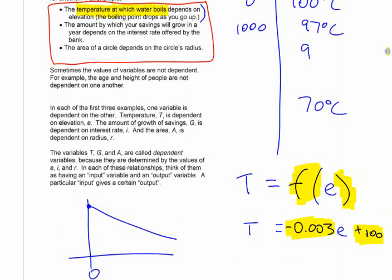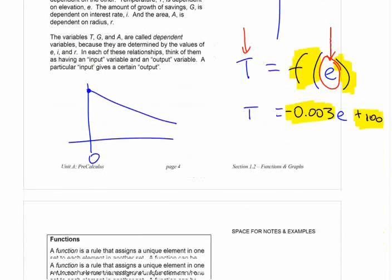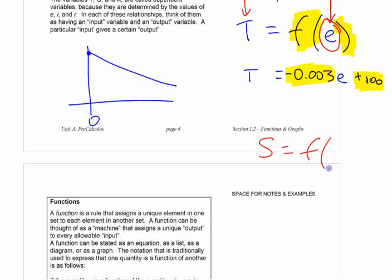There are a couple other functions written up there that are maybe sort of obvious as well. The amount by which your savings grows depends on the interest rate. With the concept of a function, you need to think about which is the dependent and which is the independent variable. For the temperature example, elevation is the independent variable — first there's some elevation, and then the boiling point depends on that. For savings, savings is some function of the rate: the rate is whatever it is, and your savings depends on that rate. So: independent and dependent variable — that's the concept.